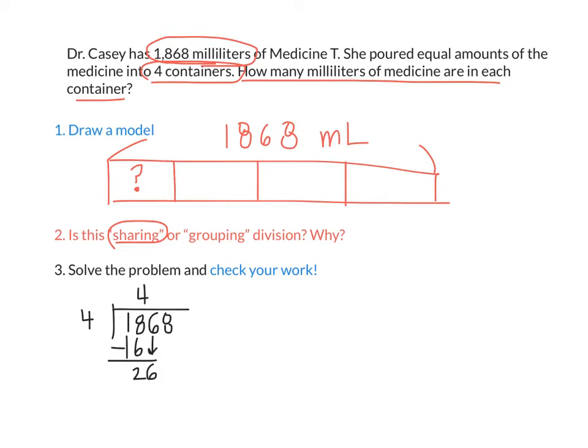What's 26 divided by 4? 6. 6 times 4 is? 24. We have 2 left over. Those two 10s can become 21s. And we bring down the 8 ones we already usually had. We have 28 ones. What's 28 divided by 4? 7. 7 times 4 is 28, which means our remainder is 0. So what I think the answer should be is 467 milliliters of medicine.